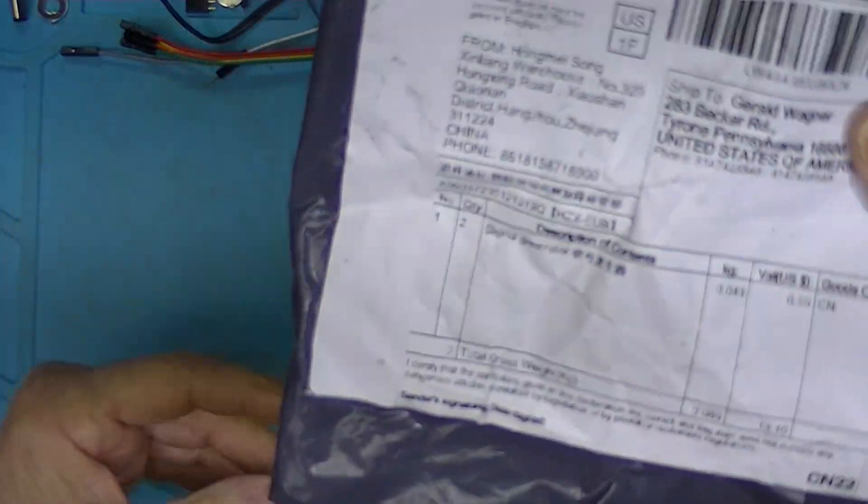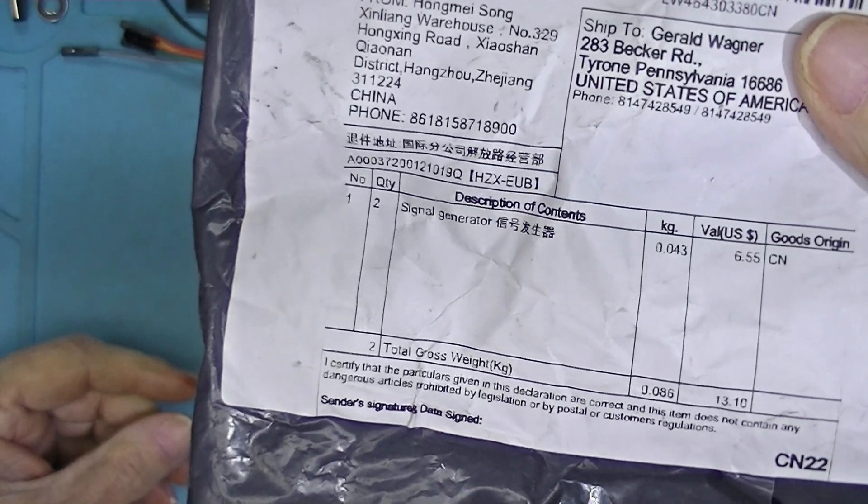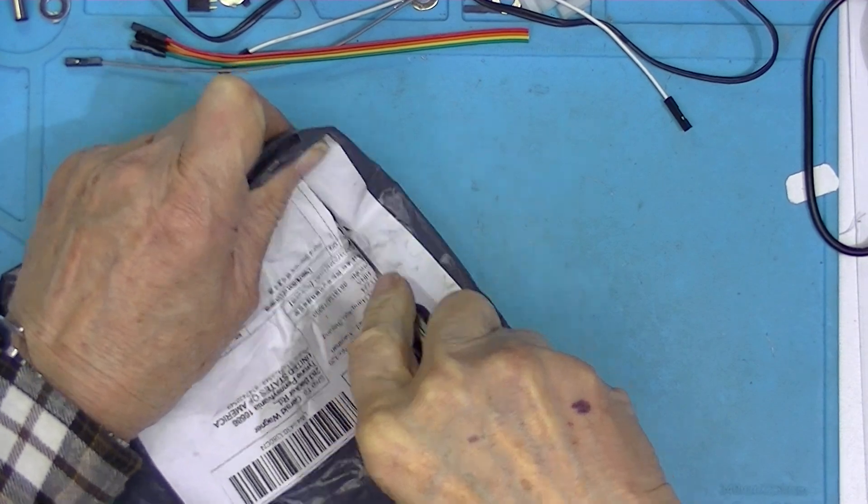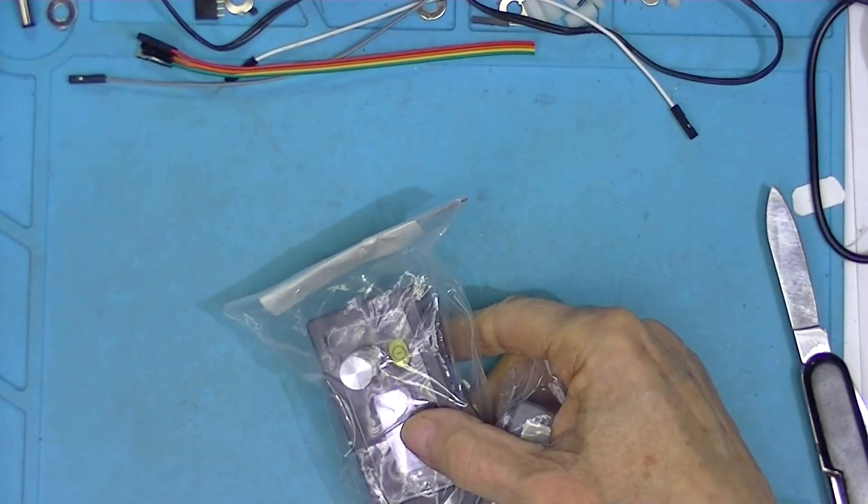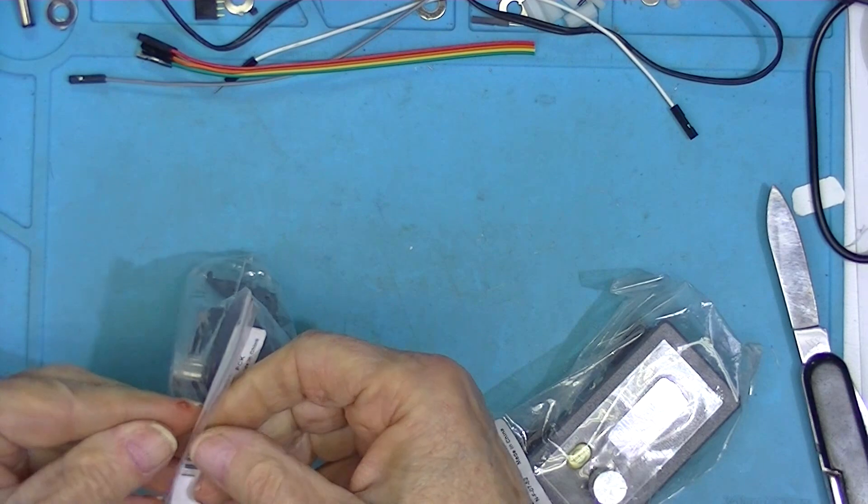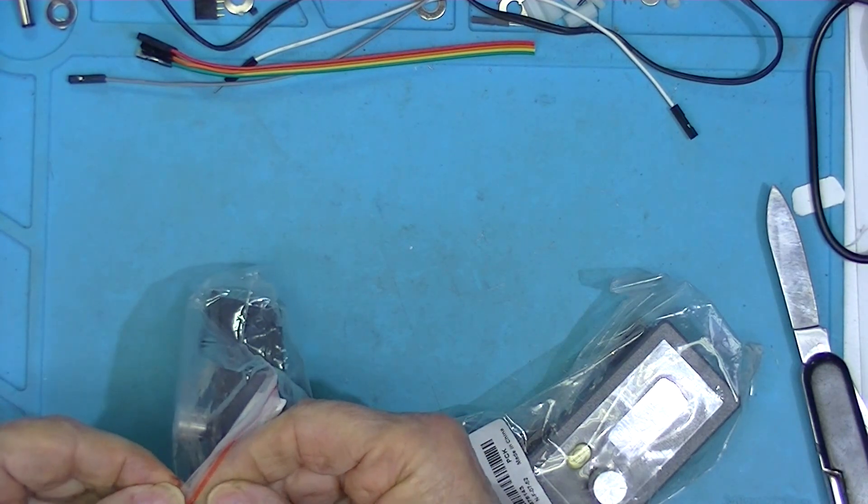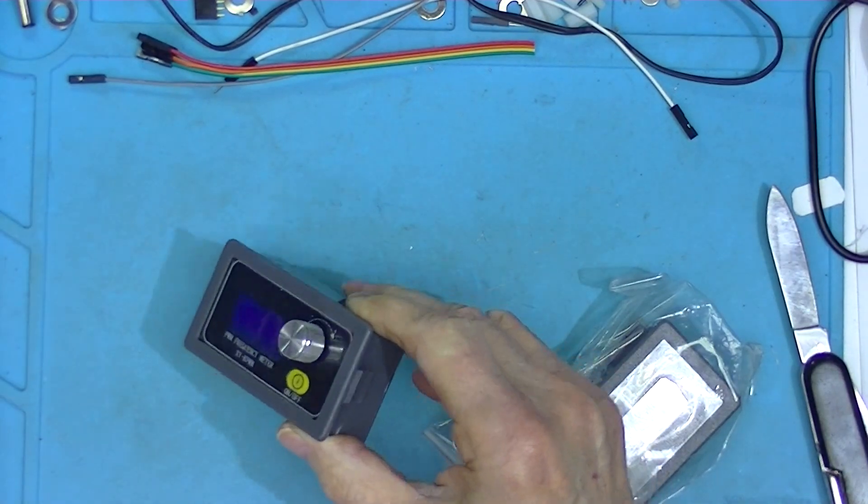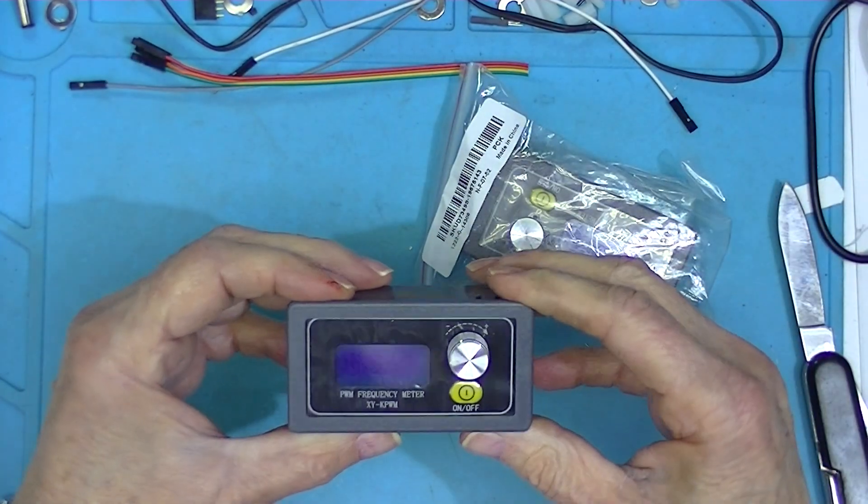Here's a package. It's a Banggood package. It says there's two signal generators in here. These are little square wave generators.